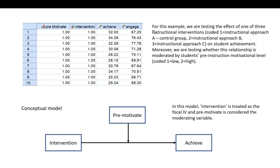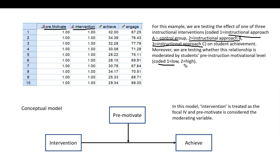The example data we're working from is fictitious student data. Students were assigned to one of three instructional intervention groups: intervention coded 1 for instructional approach A (a control group), 2 for instructional approach B (a treatment group), and 3 for instructional approach C (another treatment group). We also have a pre-motivate variable reflecting level of pre-instruction motivation, coded 1 for low and 2 for high. The dependent variable is the achievement variable.